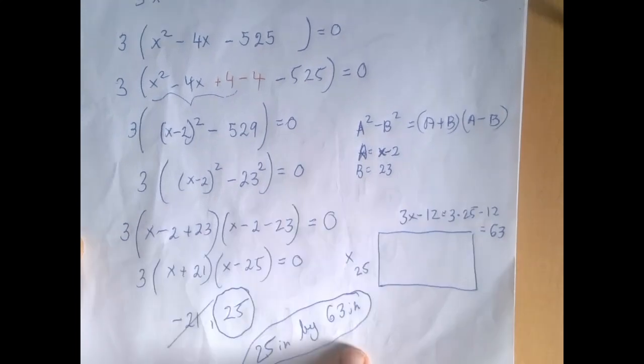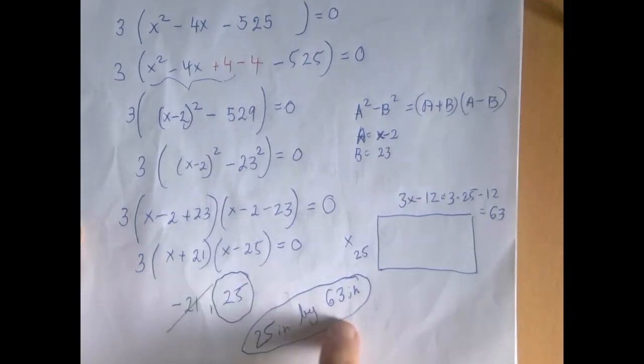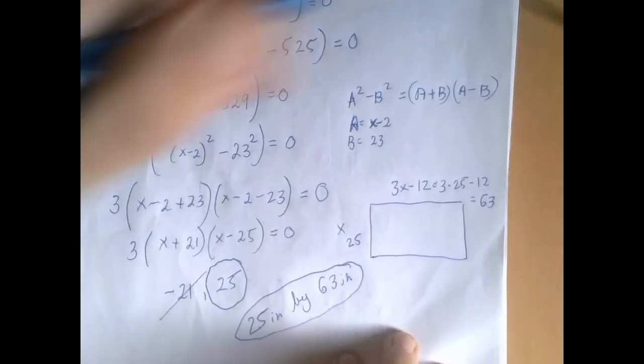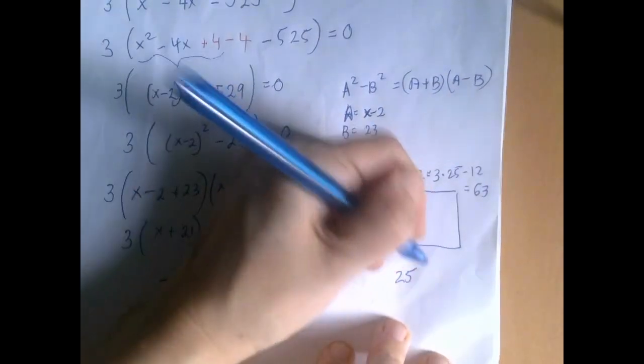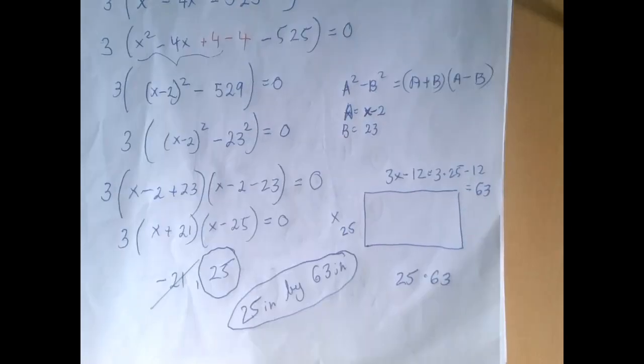So let's check. Comparison between the two sides was given, namely that one side is 12 less than 3 times another side. That's kind of trivially true because that's what we used to come up with 63. But what about the area? Is it true that 25 times 63 is indeed the right number? Do we have the right area?